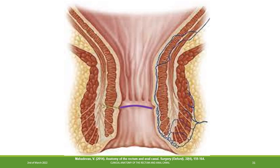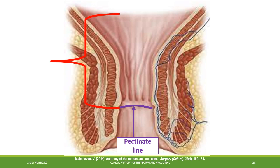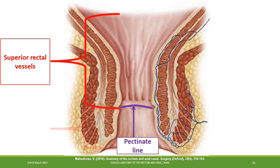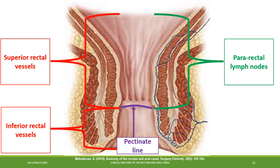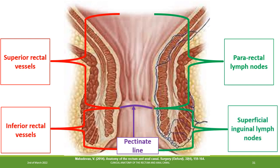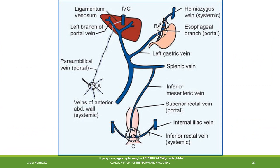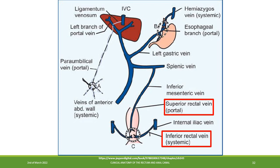The pectinate line separates the rectum and the upper part of the anal canal from the lower part. The upper part receives blood supply from the superior rectal vessels, while the lower part is supplied by the inferior rectal vessels. The lymphatic drainage of the upper part is to the pararectal lymph nodes, and the lower part drains to the superficial inguinal lymph nodes. The superior rectal vein drains to the portal circulation, while the inferior rectal vein drains to the systemic circulation, forming a portosystemic anastomosis.